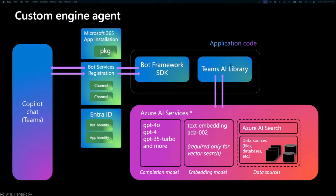You can imagine custom engine agents more like a custom bot but with more Copilot capabilities. You use a special SDK to create custom engine agents called Teams AI library. Teams AI library has all the goodies to make your agent look more like Copilot — give the Copilot look and feel to your experience. You can also use any model you want from Azure AI services, or even models outside of the Azure AI library, and integrate with any data source you want. This is a custom architecture we bring to the table.